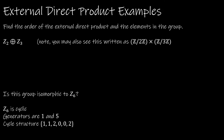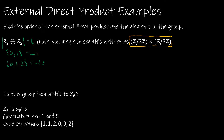Let's look at another example: the external direct product of Z2 and Z3. Z2 has order 2 and is made up of {0, 1} under addition mod 2. Z3 is {0, 1, 2} under addition mod 3. Both use addition but with different moduli, just like our last example. The order of this external direct product is 2 times 3, which is 6. The elements of the group are: (0,0), (0,1), (0,2), (1,0), (1,1), (1,2).